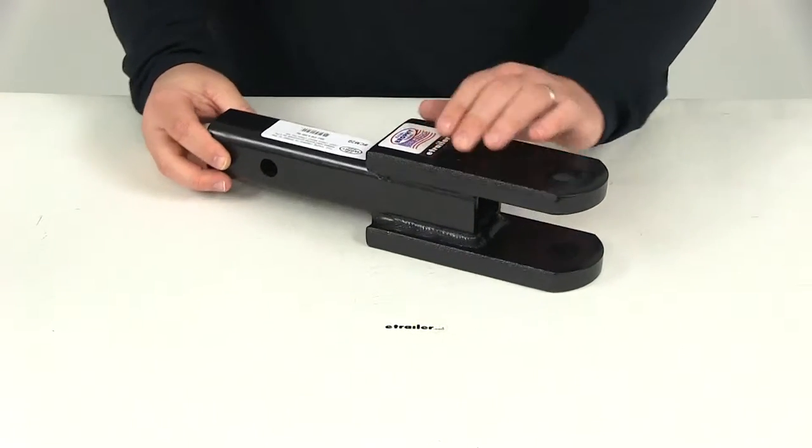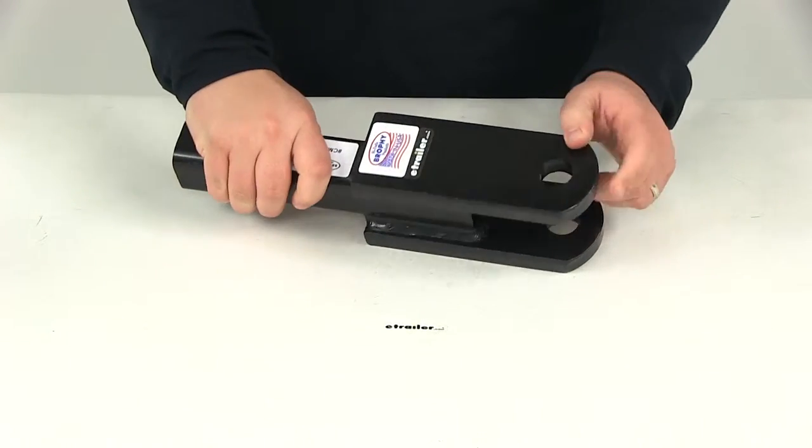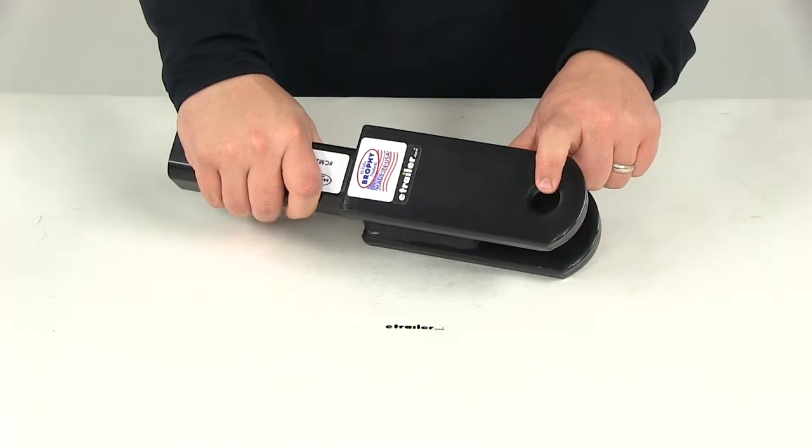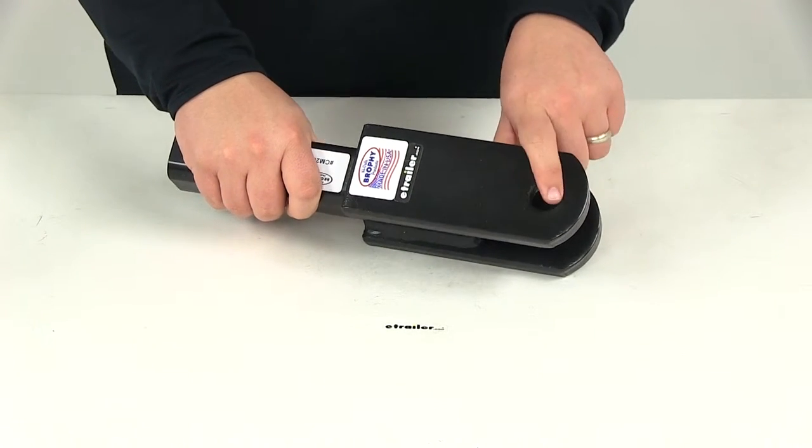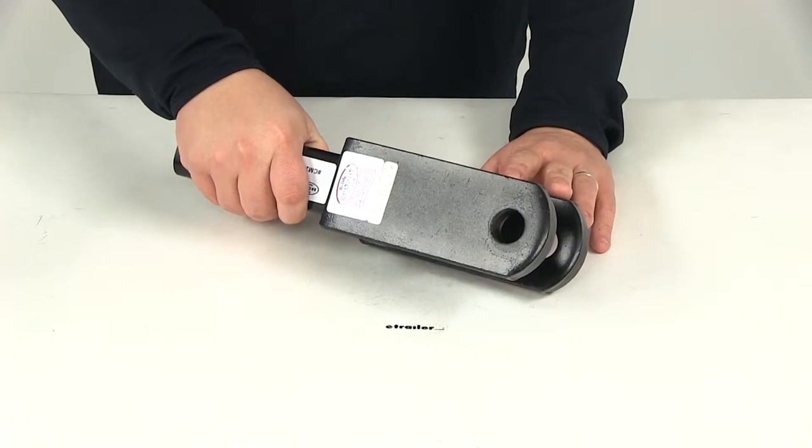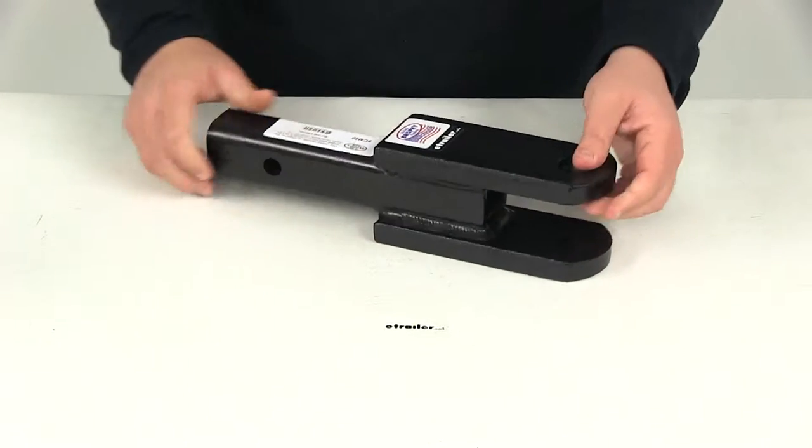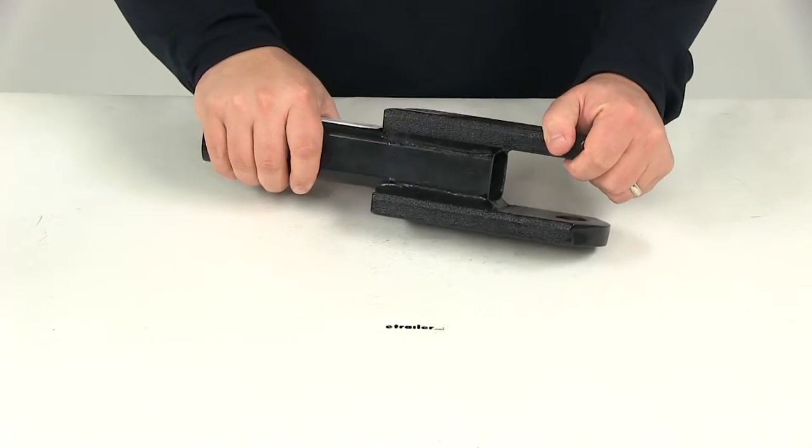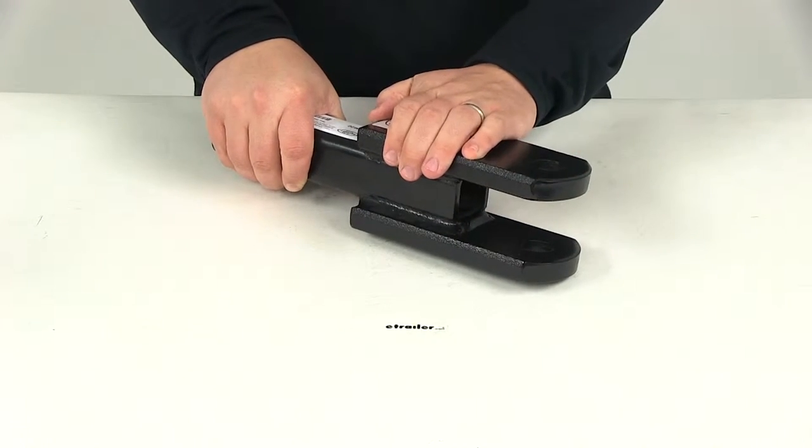The hitch-mounted clevis is going to be great for industrial and agricultural applications. It's going to use a one-inch diameter pin for a simple hookup. That is sold separately, but if you don't already have one, you can pick one up here on our website using part number CP20. The platform with the hole can also be used as a ball mount for standard towing. This is going to be made from a nice sturdy steel construction with a corrosion-resistant black powder coat finish.